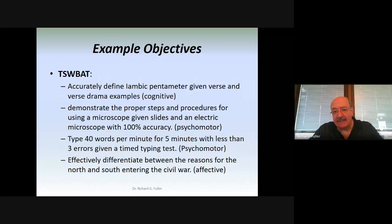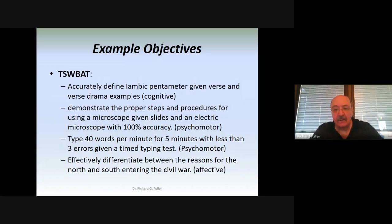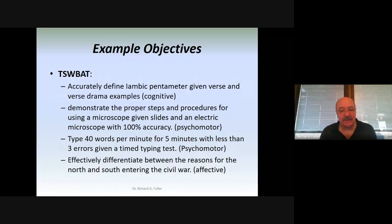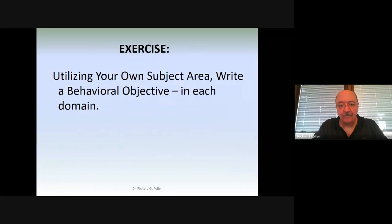Another psychomotor example: 'Type 40 words per minute for five minutes with less than three errors, given a timed typing test' — that involves standards of acceptable performance addressing quantity, quality, and time. A fourth example involving the affective domain: 'Effectively differentiate between the reasons for the North and South entering the Civil War.' This could be higher-order cognitive thinking involving analysis, synthesis, and evaluation, but could also work with the affective domain. The affective and cognitive domains will cross over, and that's okay.